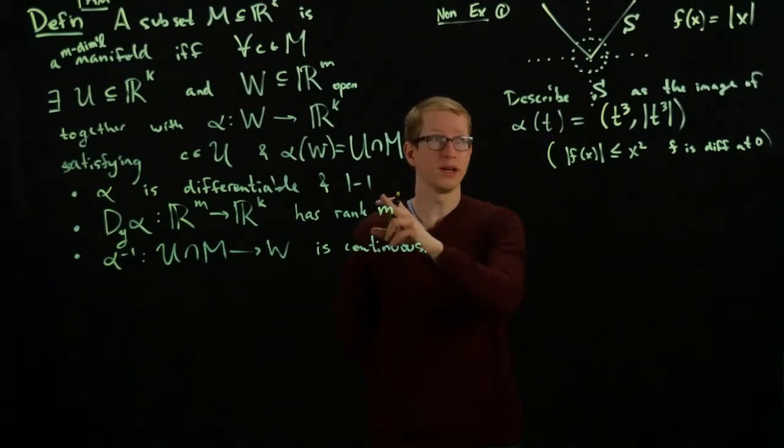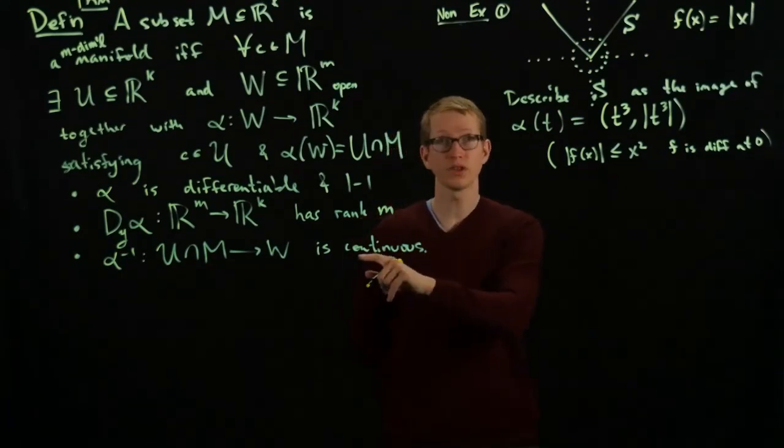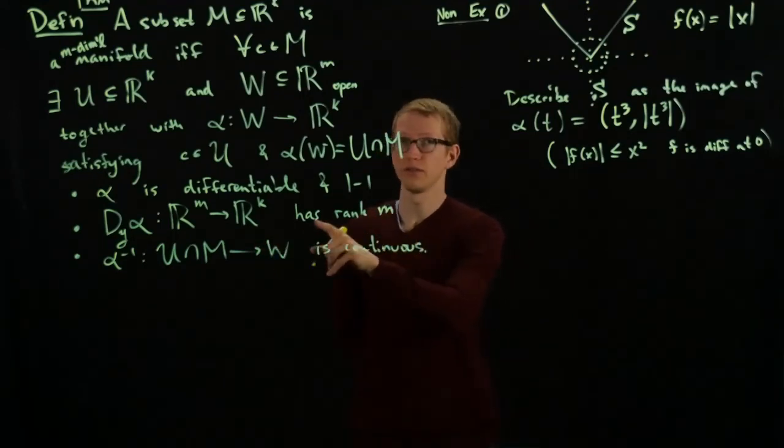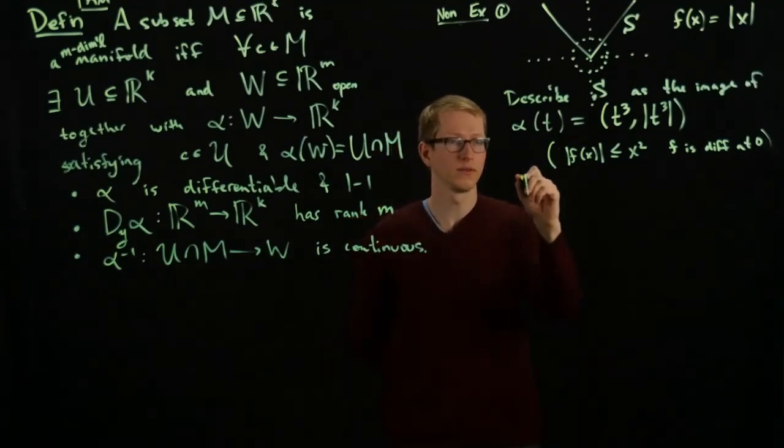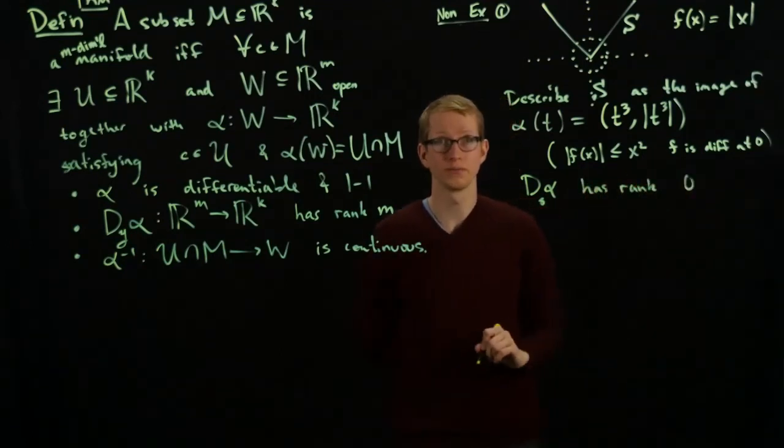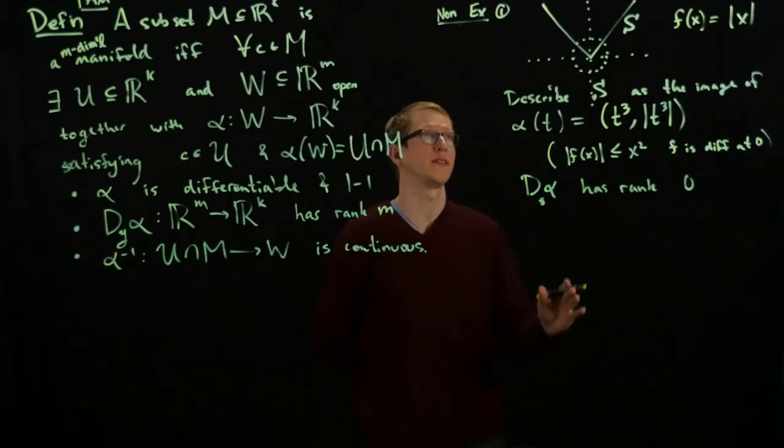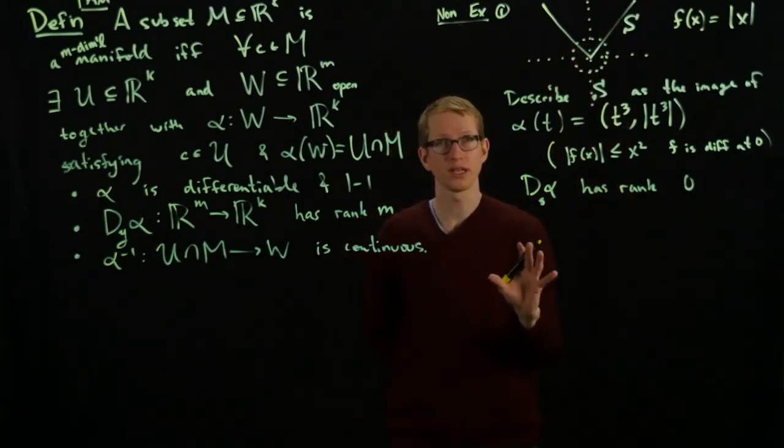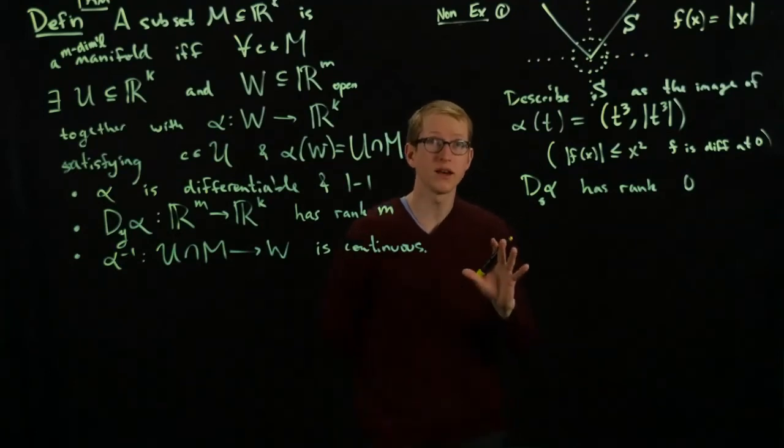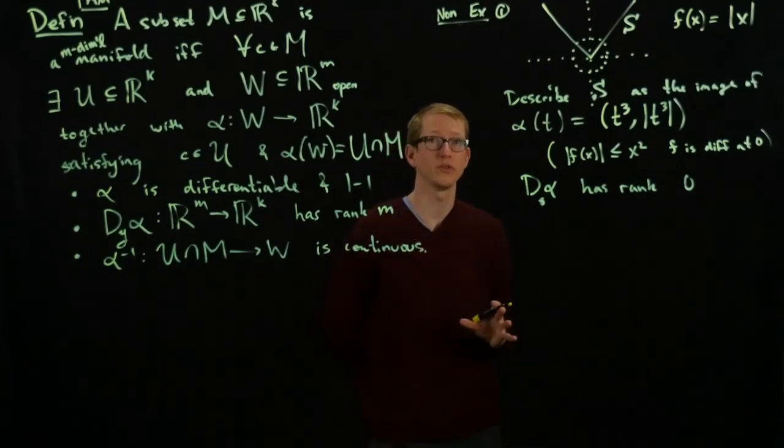Furthermore, it is one-to-one. I'll let you think about why that's the case. And in fact, the inverse is also continuous. However, the situation that goes wrong with this function is that the derivative of alpha at 0 has rank 0, and its requirement is that it have rank 1. Now, of course, again, this isn't a proof that shows that this subset is not a manifold. It just shows that for our particular choice of alpha, we weren't able to construct an alpha that satisfies these three conditions. But it is a fact that there does not exist an alpha that satisfies all these three conditions. And I'll leave that for you as an exercise.